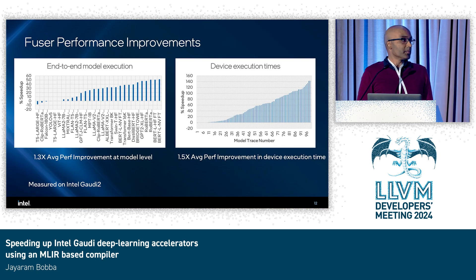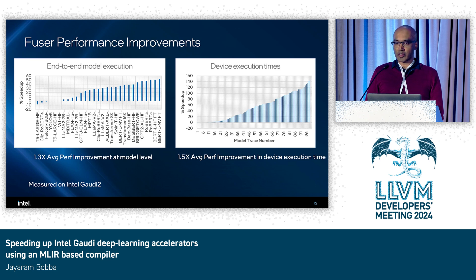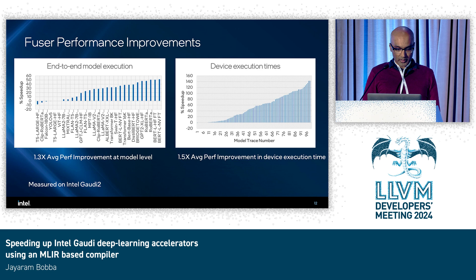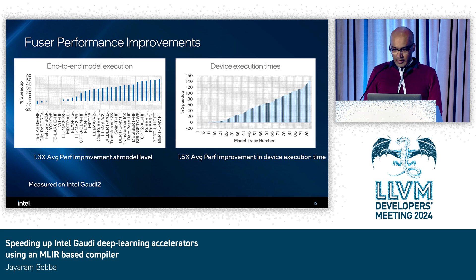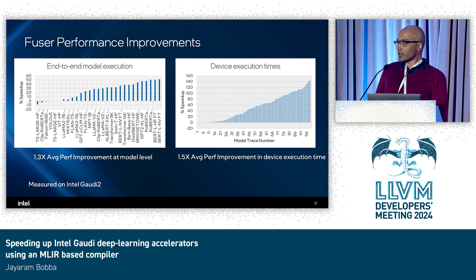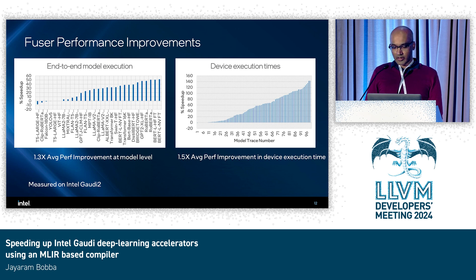This slide shows the overall performance improvements we get by using the fuser. The graph on the left shows different PyTorch workloads on the X axis and the speedup from running the fuser on the Y axis. We get up to 50% speedups, and on average about 30% speedup on Gaudi 2. On the right, focusing just on accelerator execution, we collect traces from these models run with and without the fuser, and on average we see about a 50% speedup.